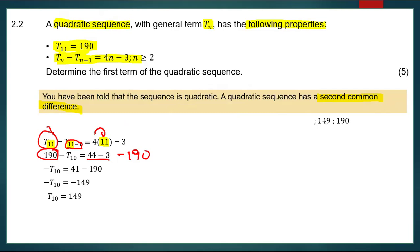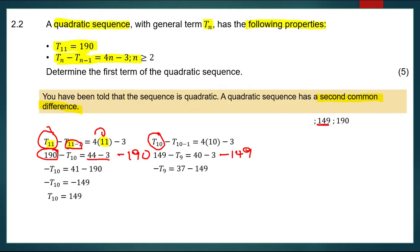I need three terms to find the second common difference, so I repeat the same process. Using the same general term with n=10, wherever there is n I substitute 10, and where there is t10 I substitute 149. 4 times 10 gives 40, and transposing 149 gives negative 149. So 40 minus 3 gives 37, and negative t9 equals 37 minus 149, which gives negative 112. Dividing both sides by negative 1, t9 equals 112.